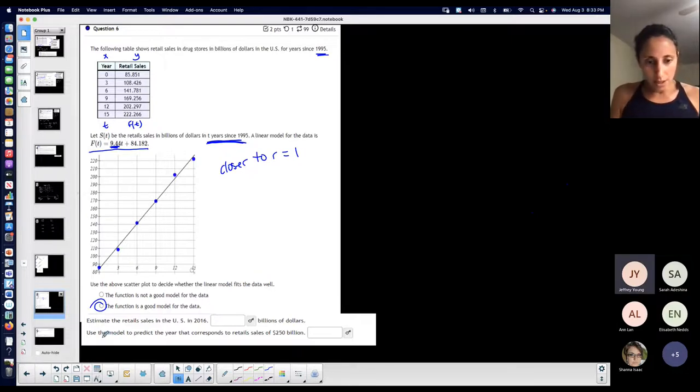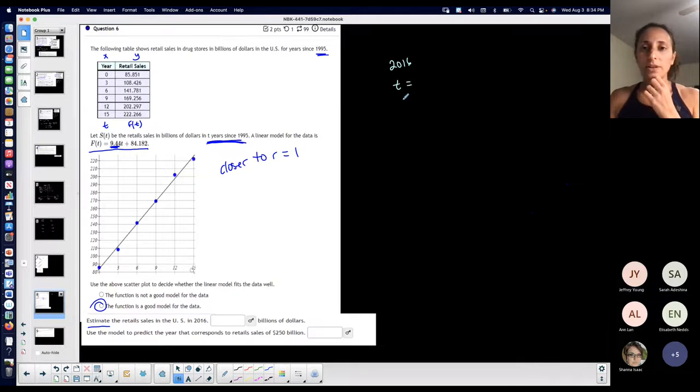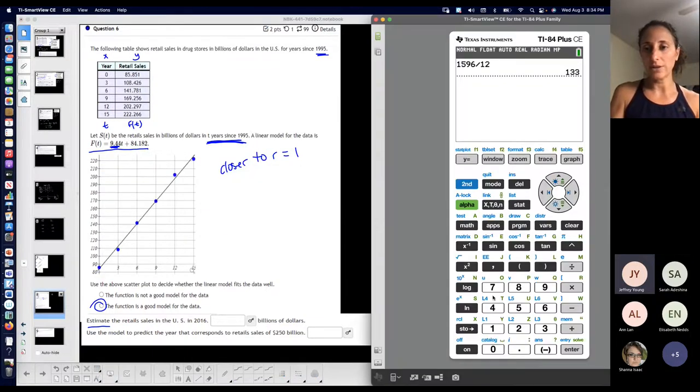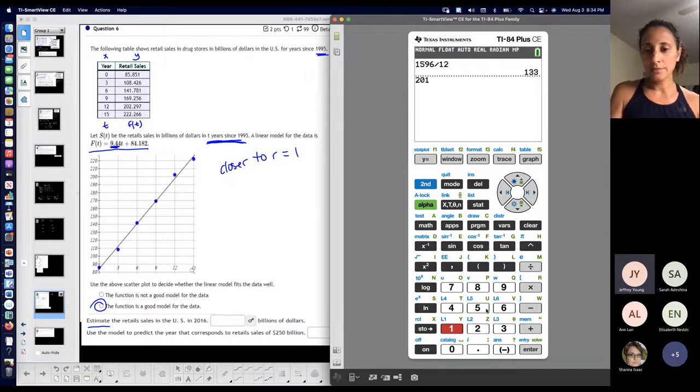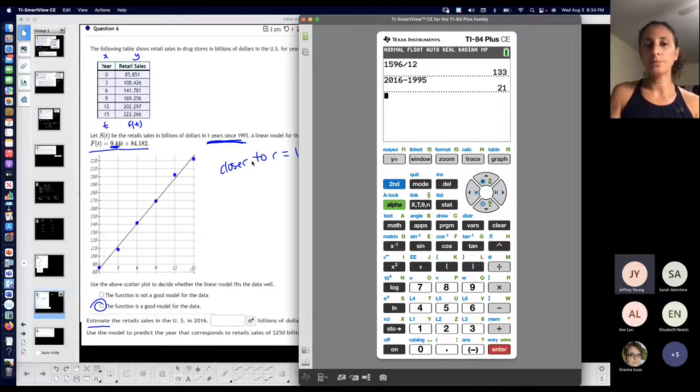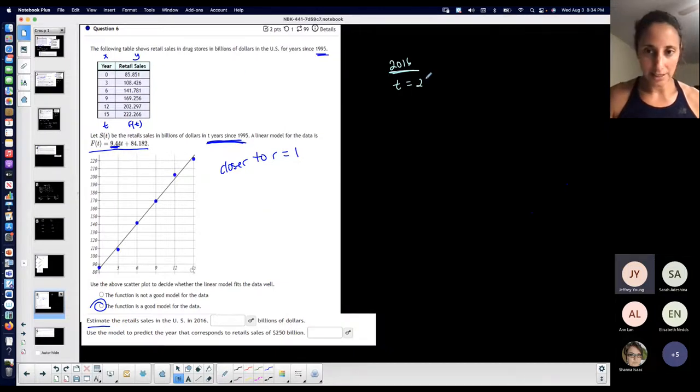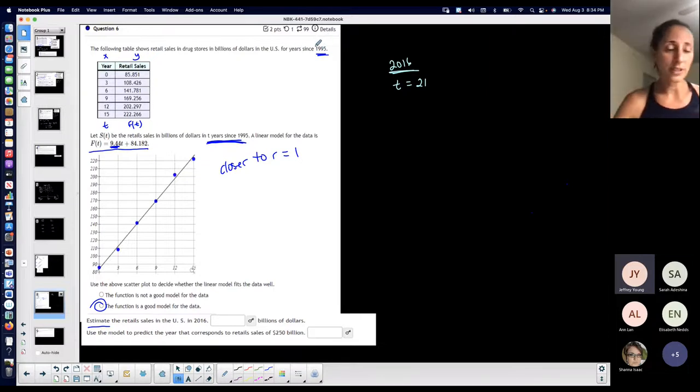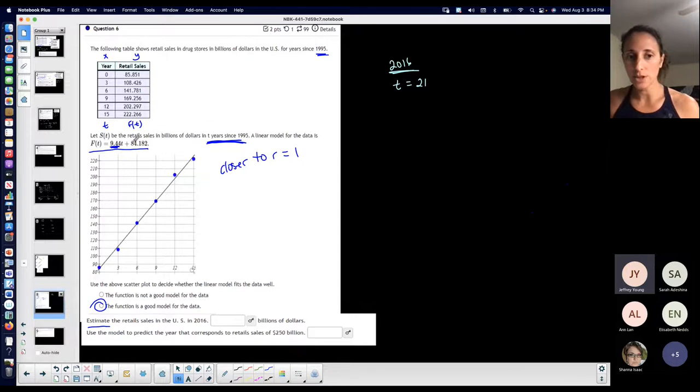Estimate, here you go. OK, estimate. They're saying estimate because you can't say exactly. It's an estimate, because this line is not perfect. Not all the data is on the line, but it's pretty good estimation. Estimate the retail sales in US in 2016. So 2016. If I'm talking about the year 2016, I have to figure out how many years since 1995 that is. And that's not hard. You can literally go to your calculator and say, well, 2016 minus 1995 is how many? How many years difference? 21. So because we're talking about the year 2016, T represents years since 1995. That's important because we're not plugging 2016 into the equation. We're plugging 21.